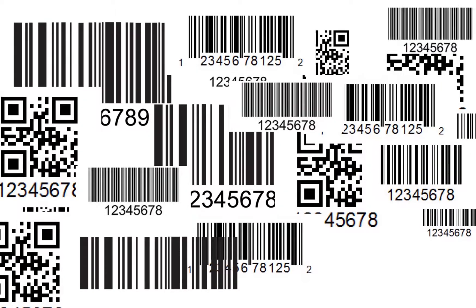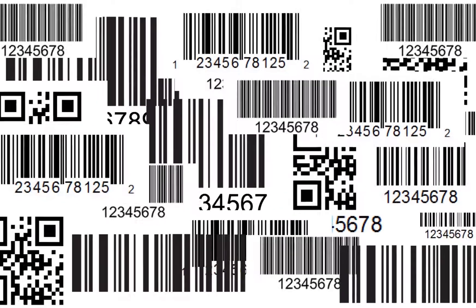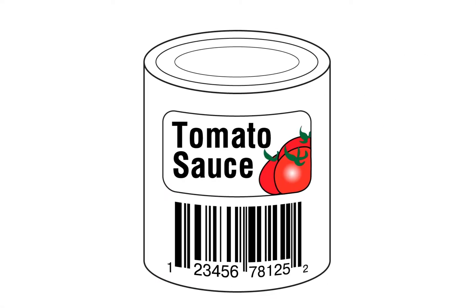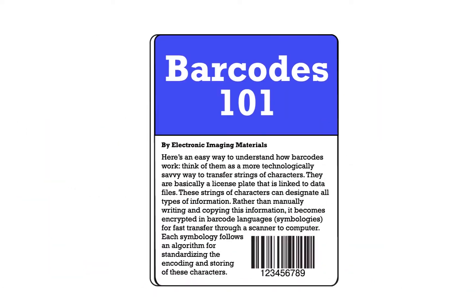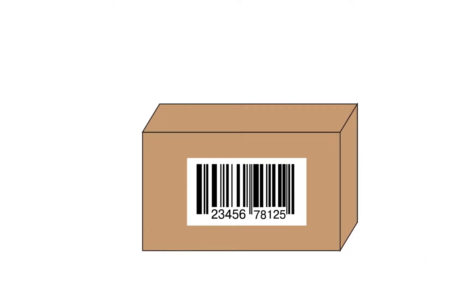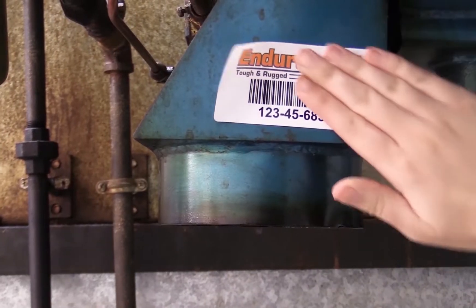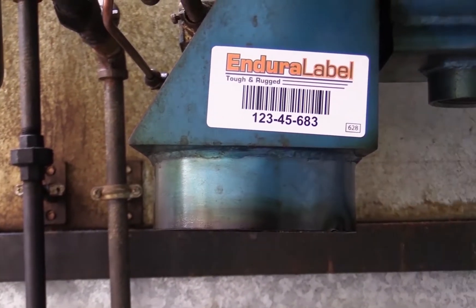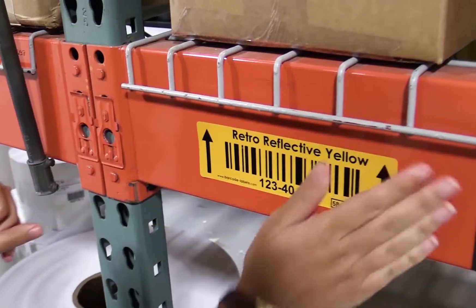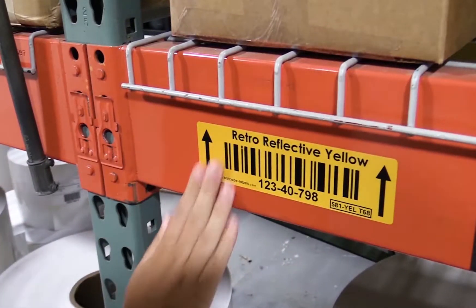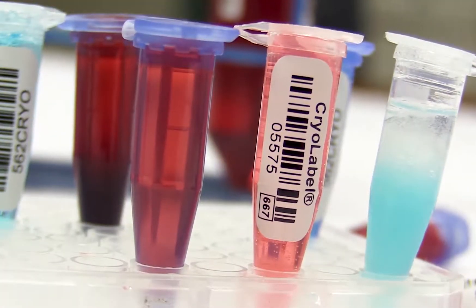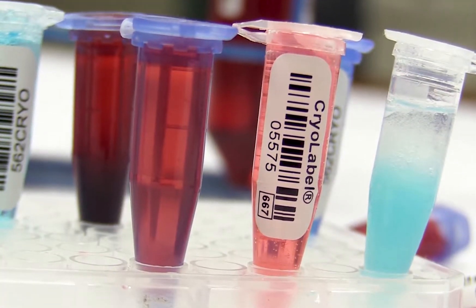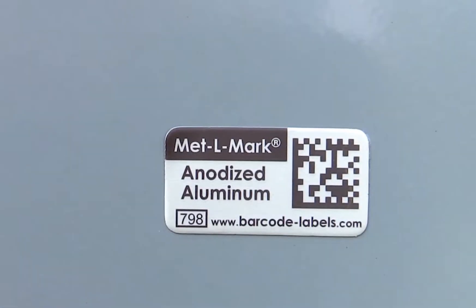Barcodes — they're everywhere, from supermarket products to books, packages, and now even smartphone screens. Barcodes serve an important role, but understanding them can be pretty tough. Barcodes are getting more and more complex to understand as technology grows.